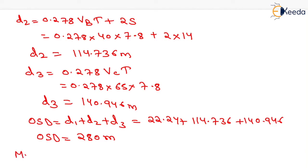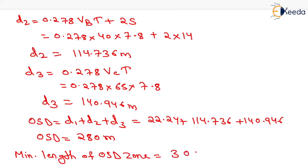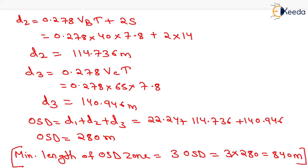The minimum length of the OSD zone equals 3 times the OSD. Putting in the value of OSD as 280 m, we get the minimum length of the OSD zone equals 840 m.